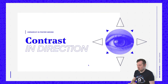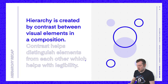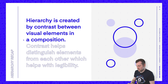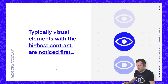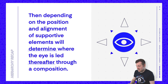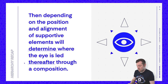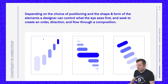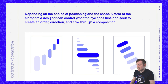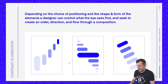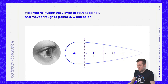So let's take a look at how contrast in direction can help develop visual hierarchy. A quick recap: hierarchy is created by contrast between visual elements in a composition. Contrast helps distinguish elements from each other, which helps with legibility. Typically, visual elements with the highest contrast are noticed first, and then depending on the position and alignment of supportive elements will determine whether the eye is led thereafter through a composition. Here you're inviting the viewer to start at point A and move through to points B, C, and so on.